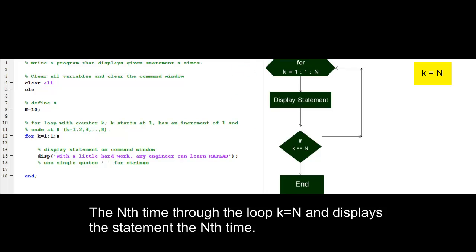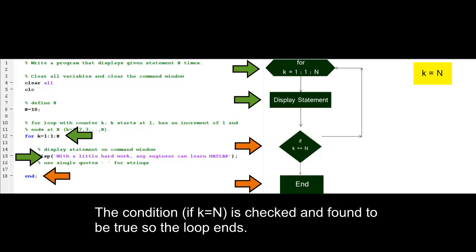The nth time through the loop, k equals n, and displays the statement the nth time. The condition if k equals n is checked and found to be true, so the loop ends.